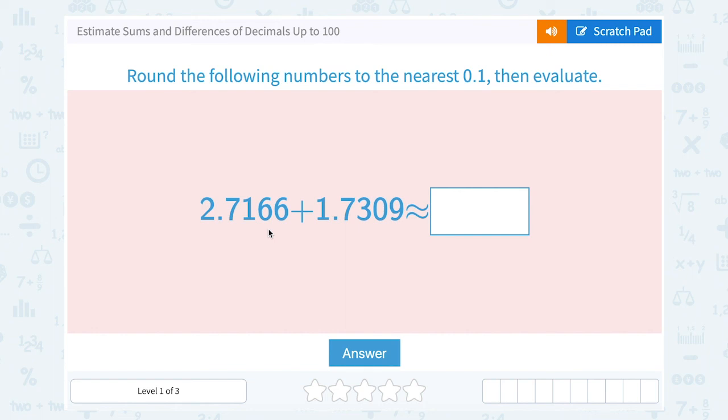Let's take a look at how to estimate sums and differences of decimals up to 100. Round the following numbers to the nearest one-tenth, then evaluate.